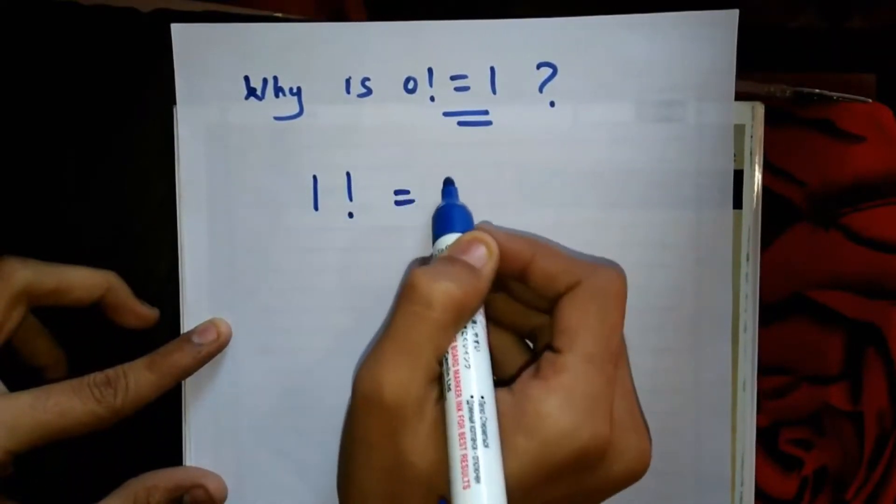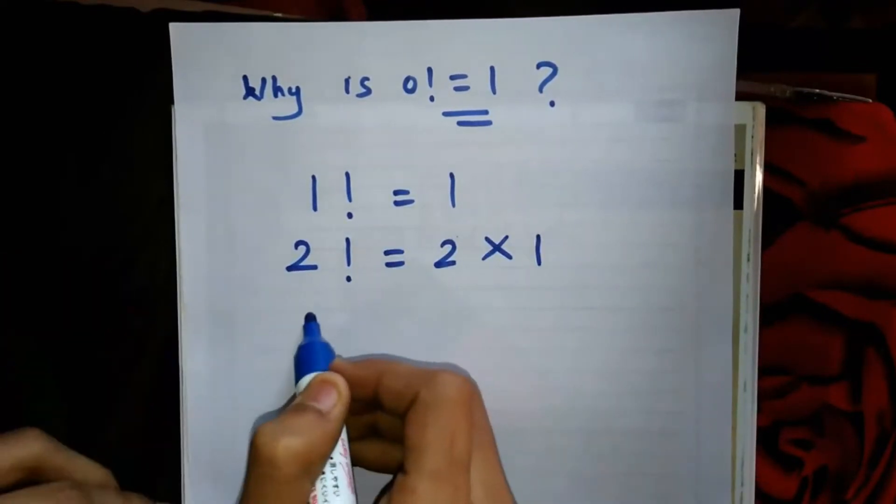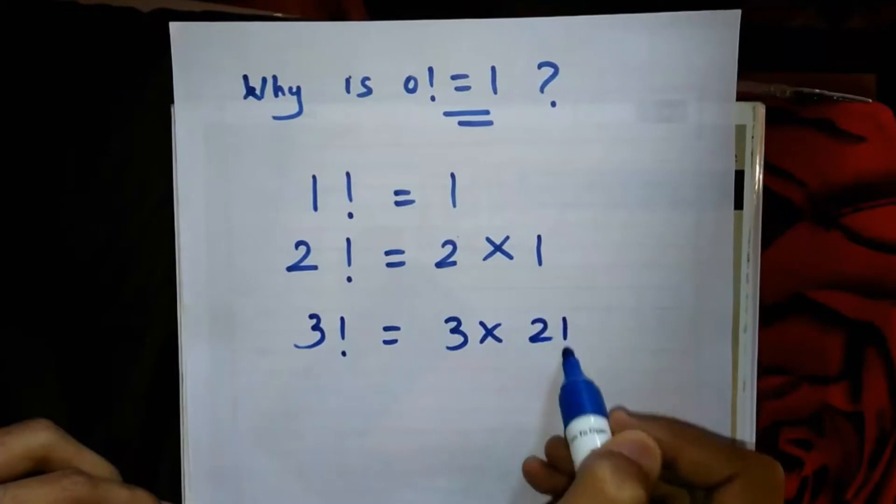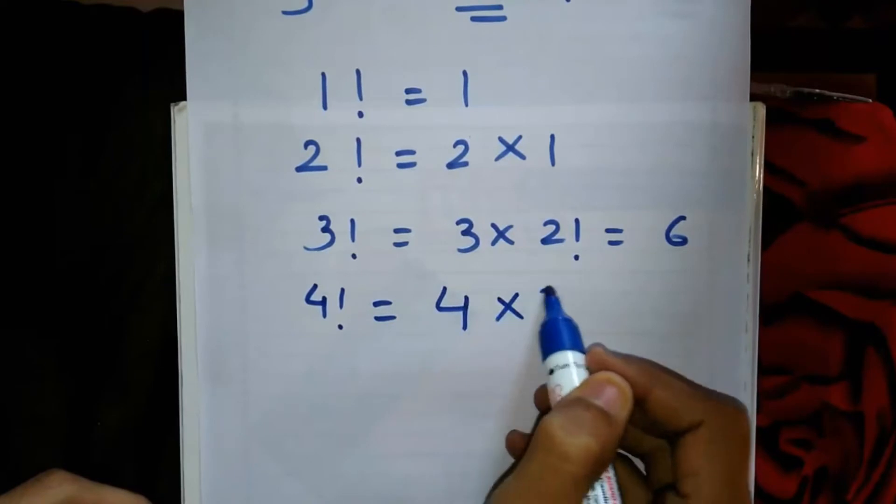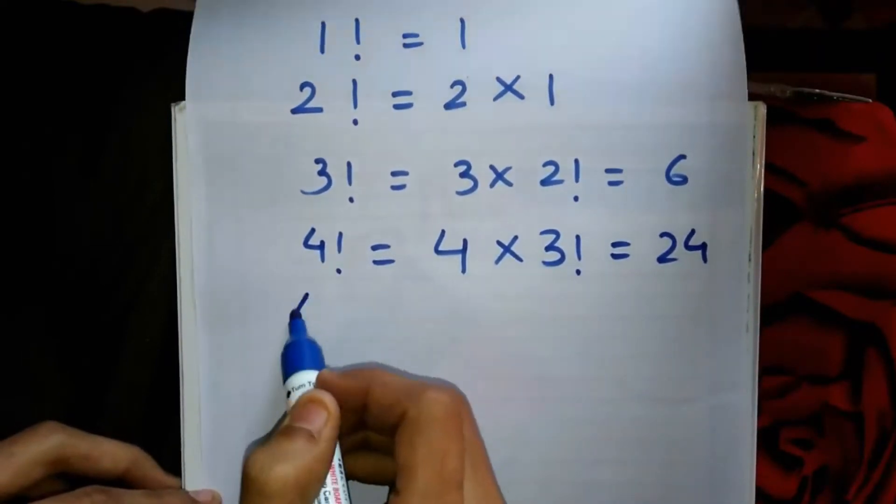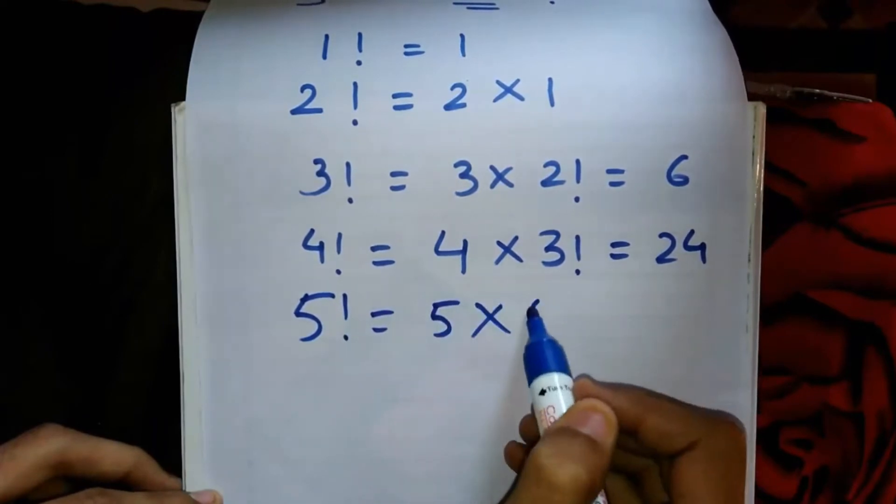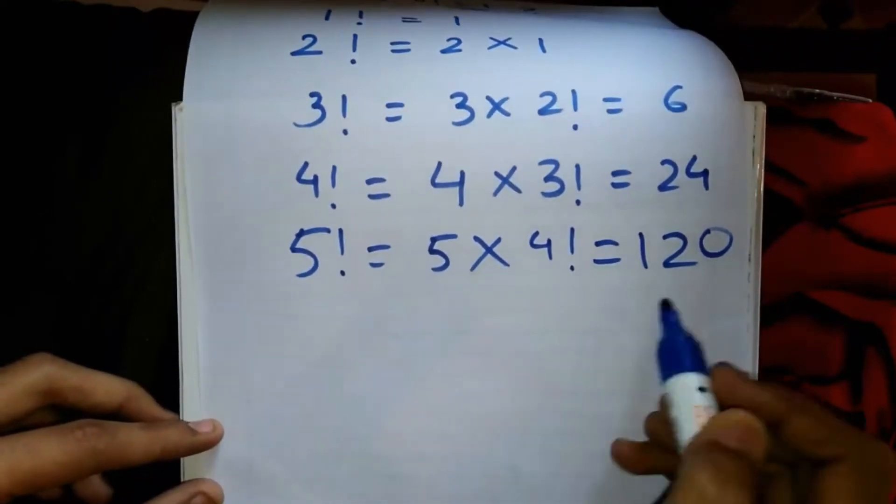As we know, 1! = 1, 2! = 2 × 1, 3! = 3 × 2! = 6, 4! = 4 × 3! = 24, and 5! = 5 × 4! = 120. The series continues in the same way.